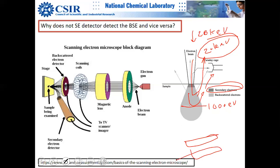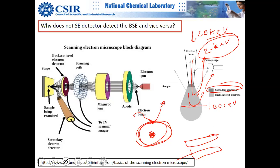Secondary electrons have some escape velocity too. Out of 20 keV, some energy is given to an outer electron, some is used to free it from the atom, and the rest becomes kinetic energy — giving secondary electrons only 5 to 50 electron volts of energy. The energy difference between backscattered electrons and secondary electrons is tremendous.